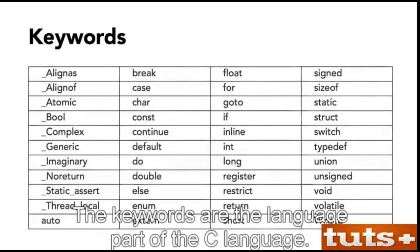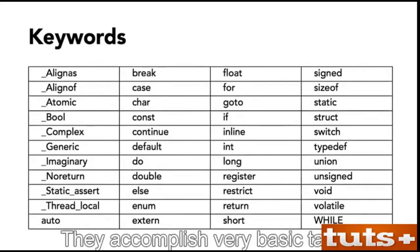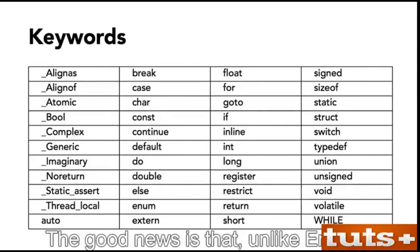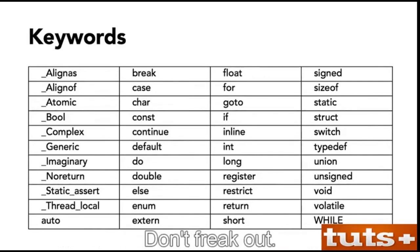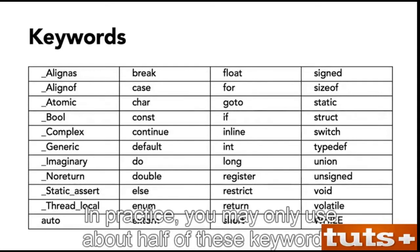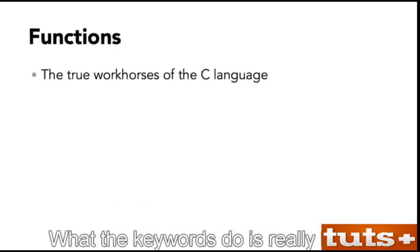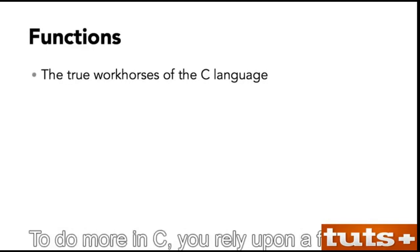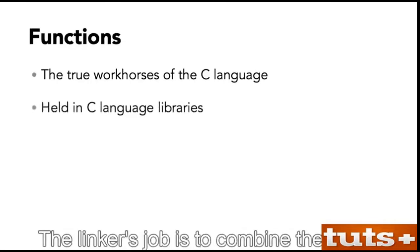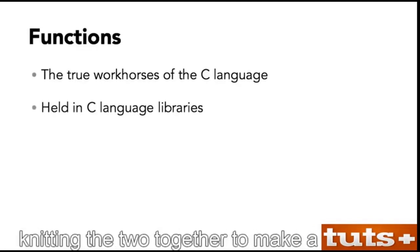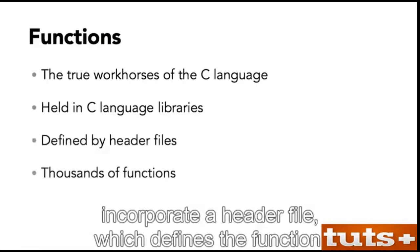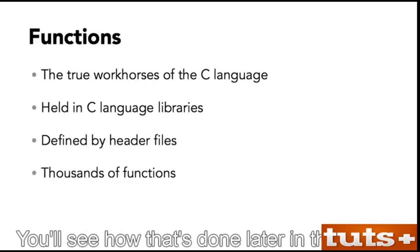The keywords are the language part of C. They accomplish very basic tasks. Unlike English, which has tens of thousands of words, there are only 44 words in the C language. In practice, you may only use about half of these keywords. The real workhorses of the C language are functions. To do more in C, you rely upon a function. The functions are held in libraries. The linker's job is to combine the library with your program's object code. To use a function in a program, you must incorporate a header file, which defines the function.